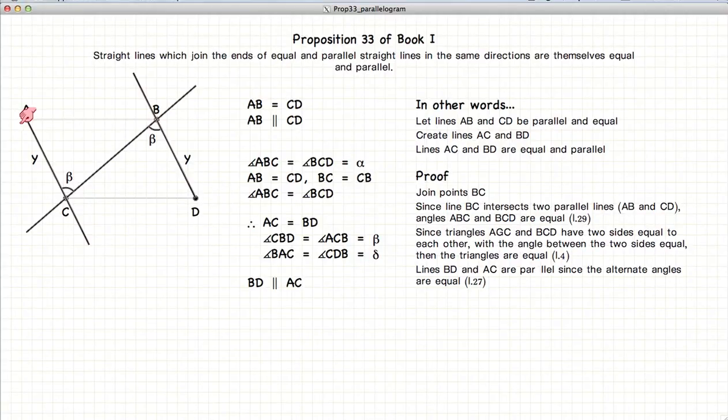Now, looking at the lines AC and BD, we have the angle ACB and the angle CBD is equal. And since they are equal according to Proposition 27, the lines AC and BD are parallel.